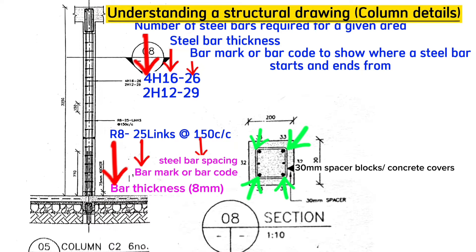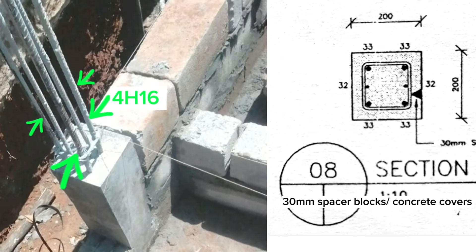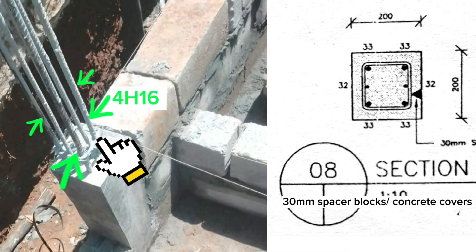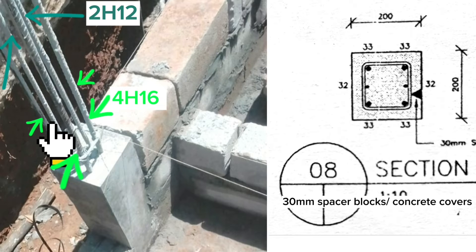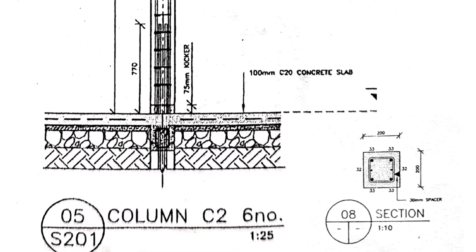At the four corners you can see H16 steel bars, and there are two H12 mid-row bars. That is exactly how we did it on the ground — four H16 steel bars at the four corners and two H12 mid-row bars on the sides. These starter bars or stub columns will be at a height of 770 millimeters above the structural slab level.